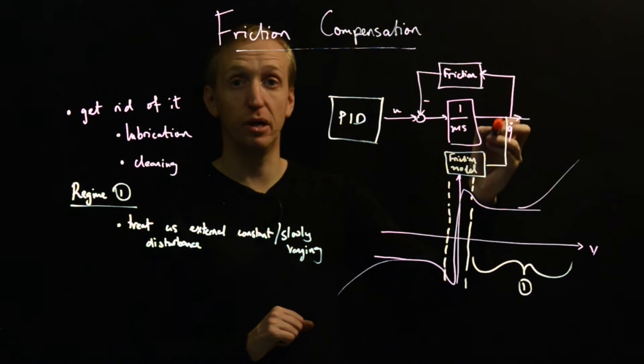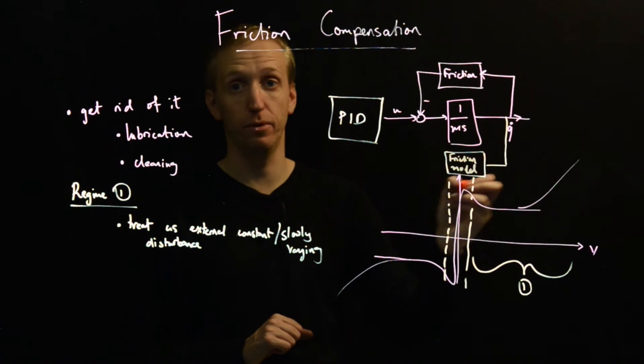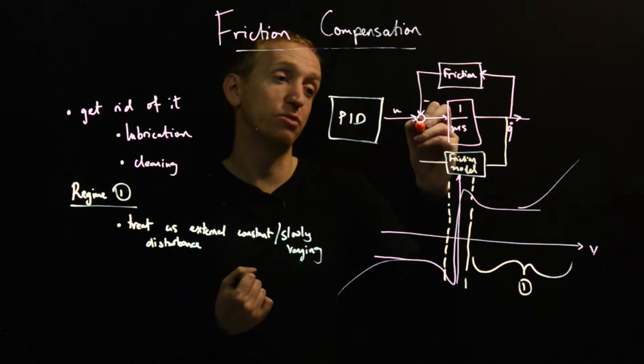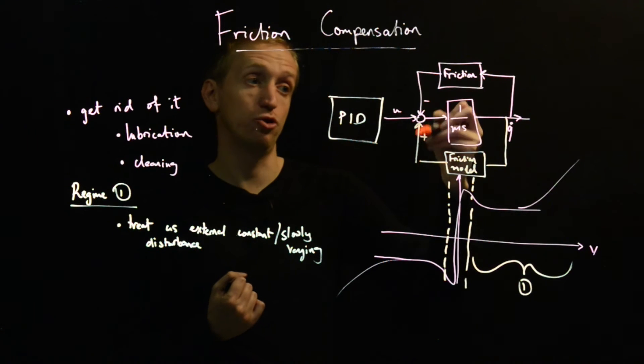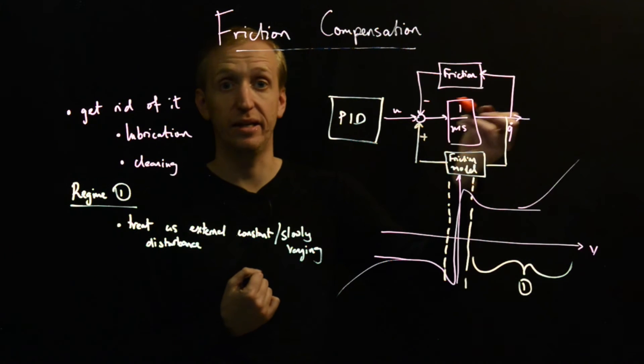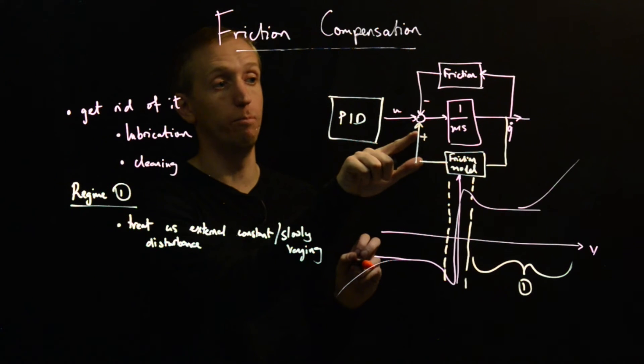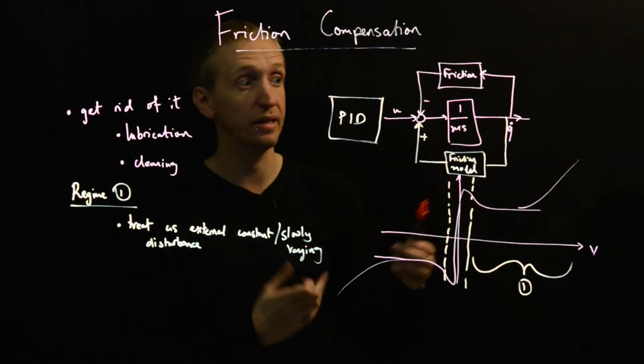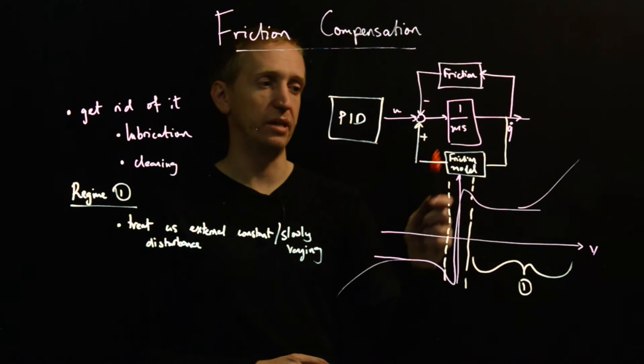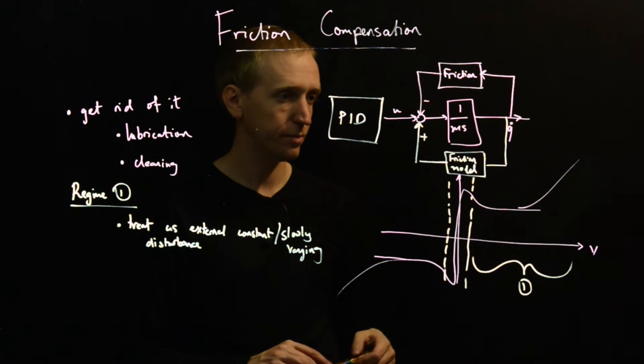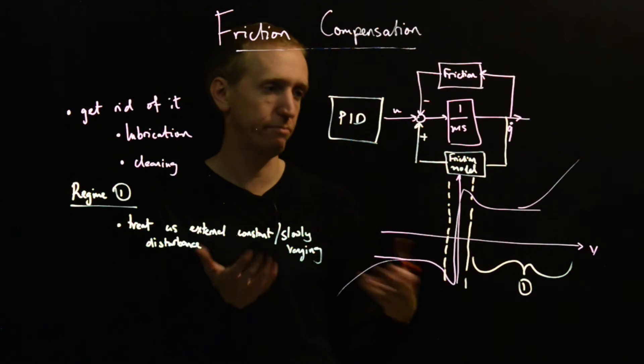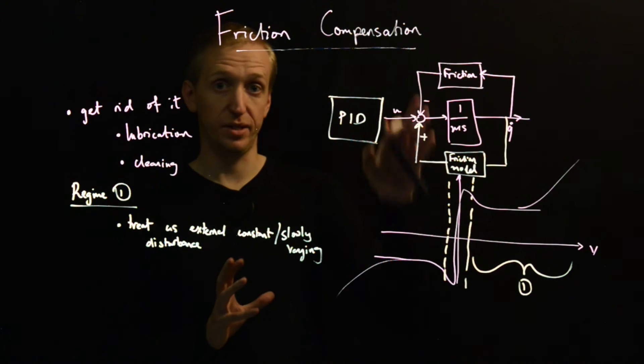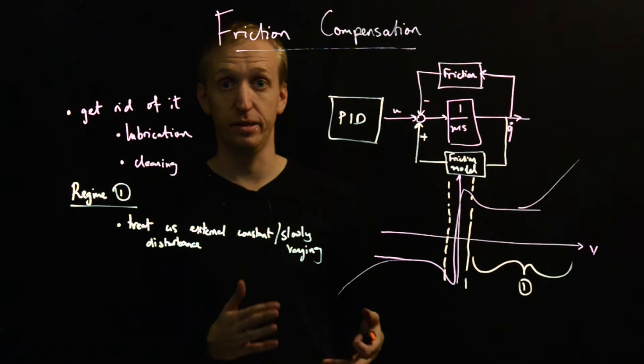If that's the case, then we can just try and cancel it out. We can put in a friction model. We measure our velocity, we have some model for the friction force that will be being applied, and then if we just modify our control input, we can try and just cancel out the effect of friction. We try and compensate for friction by predicting what it will be and opposing it. We give a simple adaptive scheme for doing this.